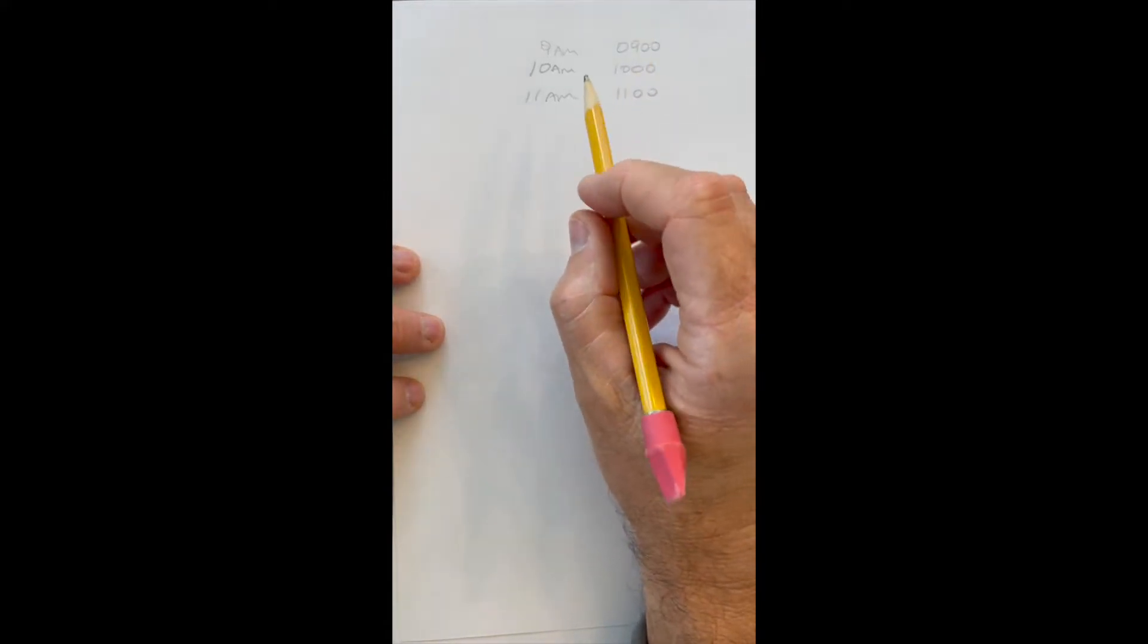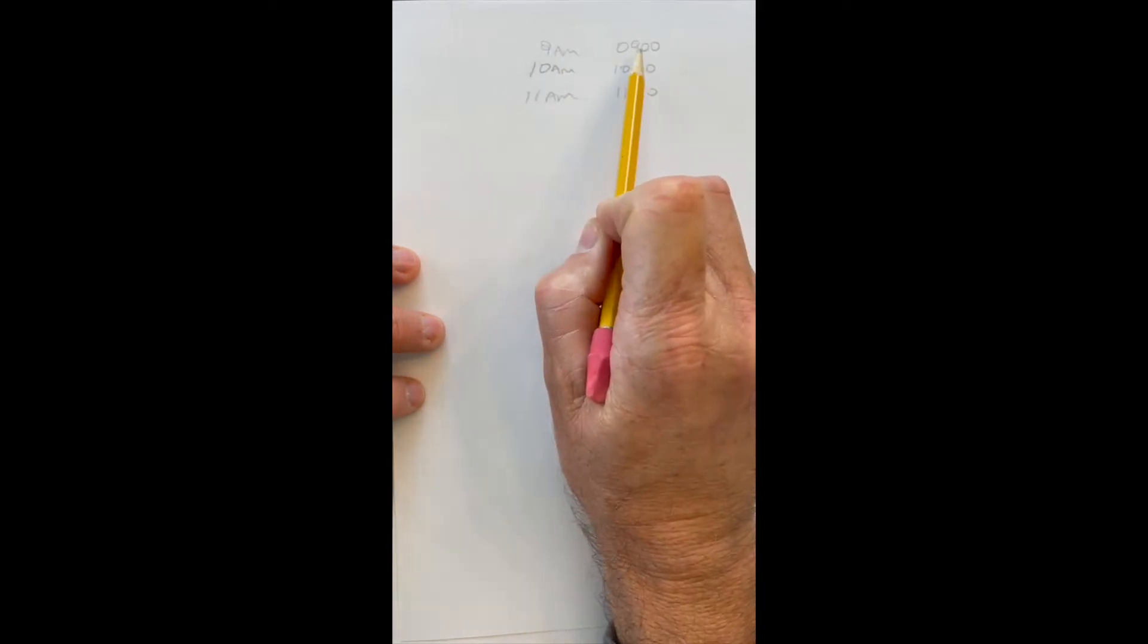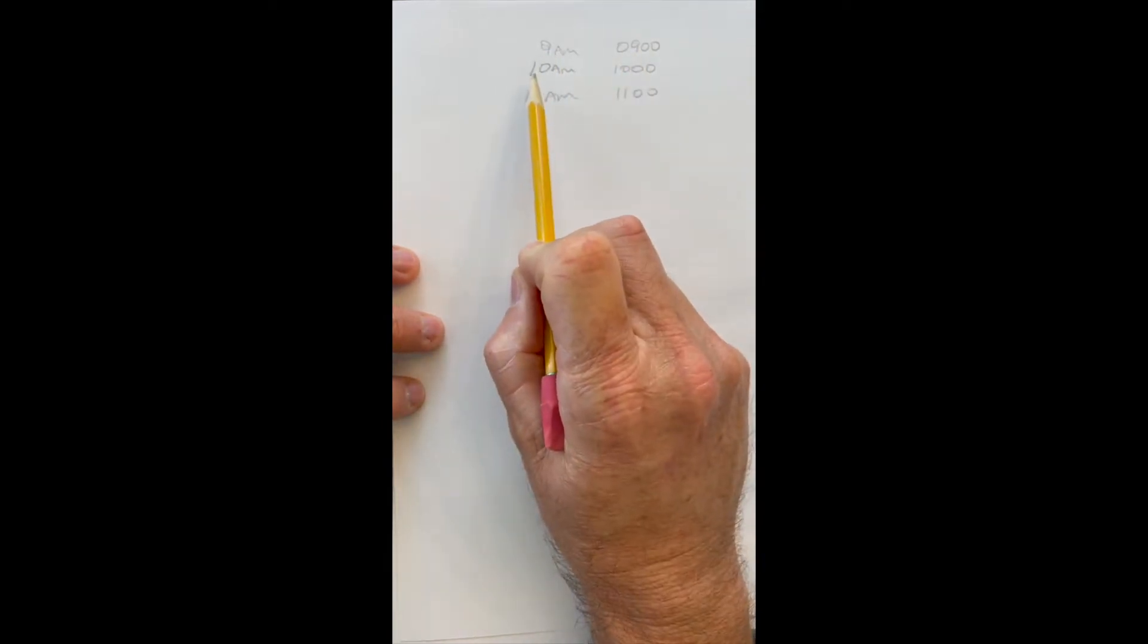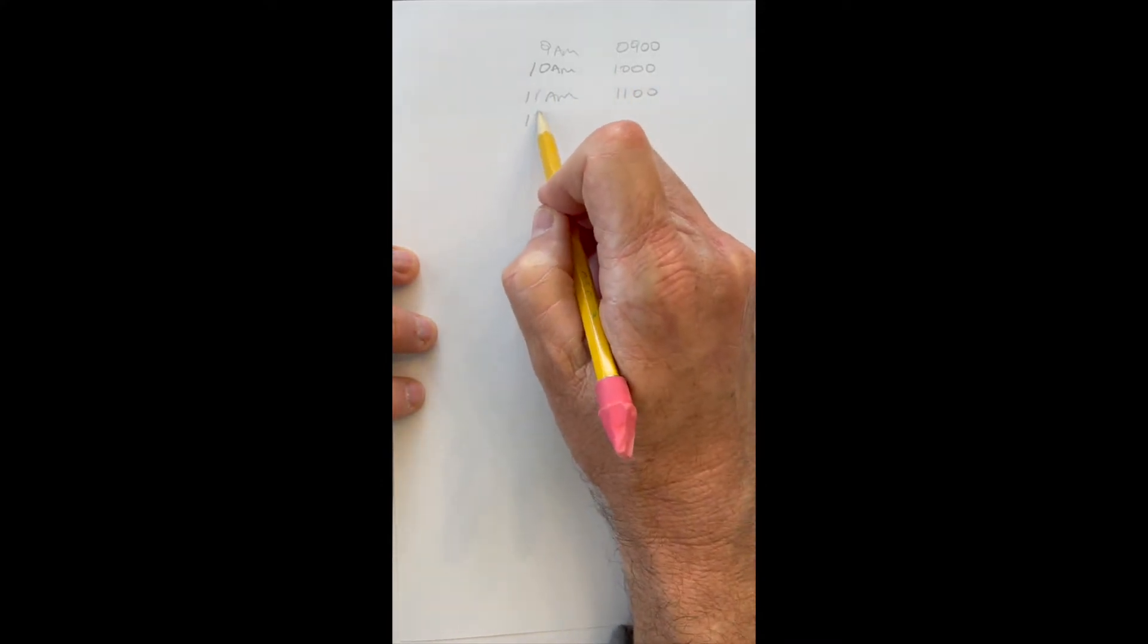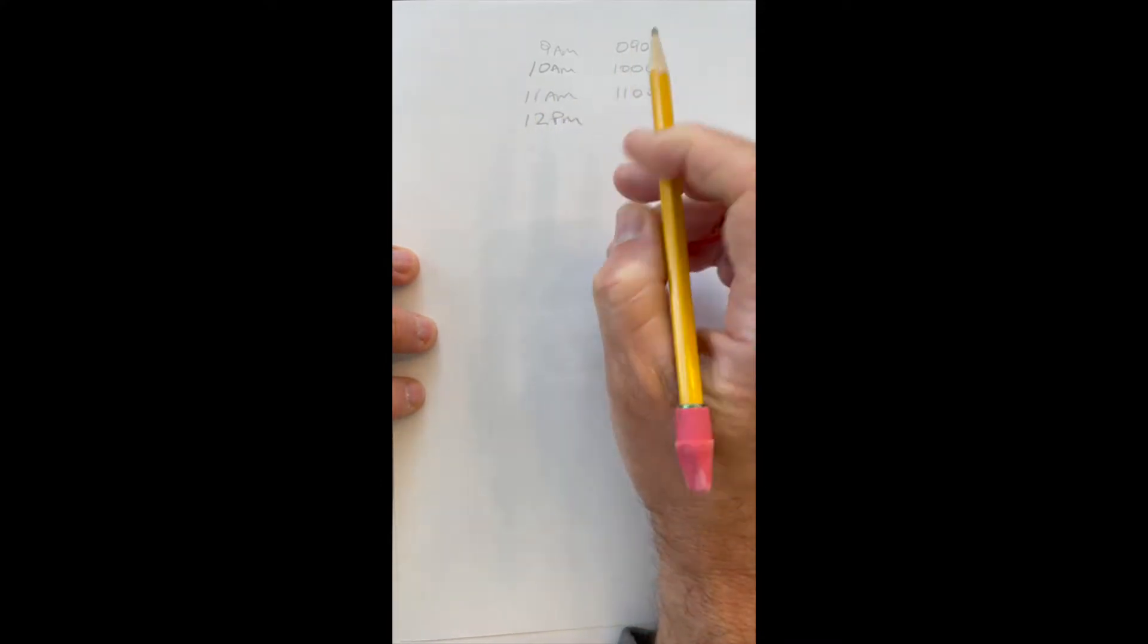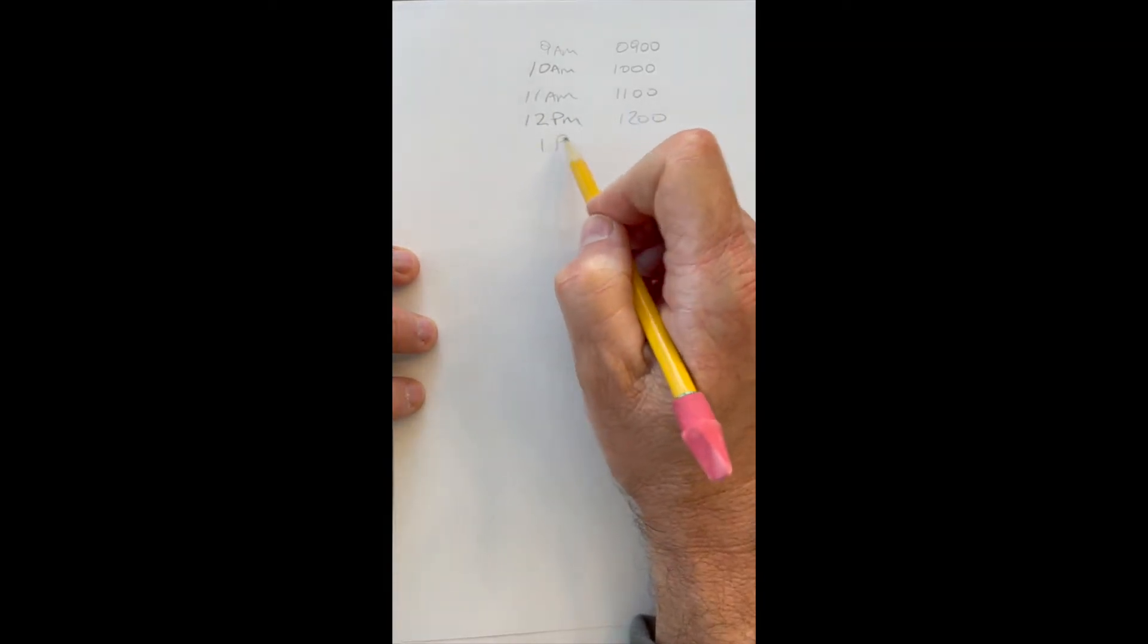Adding and subtracting military time. Remember, military time is not super difficult. 9 AM is 0900 hours, 10 AM is 1000 hours, 11 AM is 1100 hours, 12 PM, so 12 o'clock in the afternoon, is 1200.